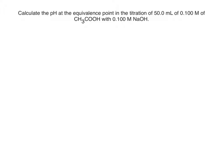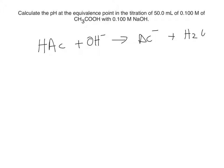At the equivalence point, all the weak acid has been titrated. For example, let's say we use acetic acid. Acetic acid is going to react with OH⁻ and this is going to produce acetate plus water. That's the reaction of the weak acid with a strong base. So in the product we have acetate, which is the conjugate base of acetic acid. Acetate is a base.